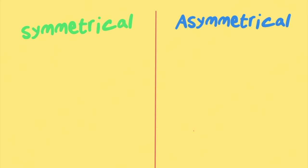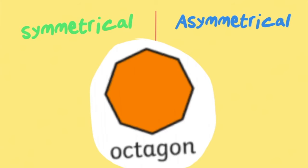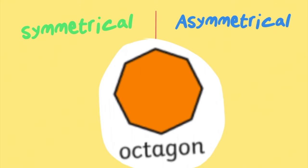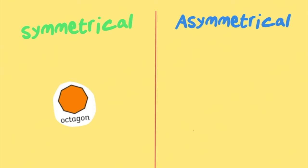Okay, you're going to tell me if these shapes are symmetrical or asymmetrical. Let's have a look at the octagon. Okay, is it symmetrical or asymmetrical, do you think? You tell me. It's symmetrical. Did you get that right?